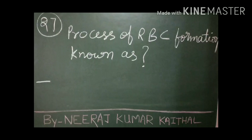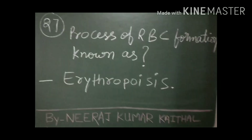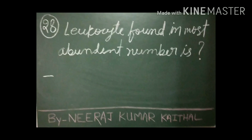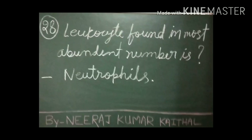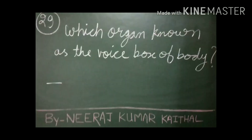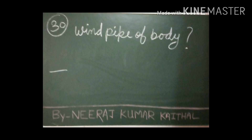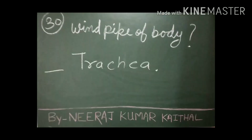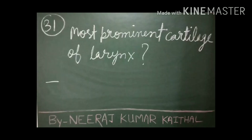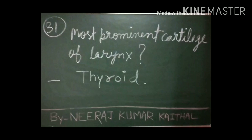The process of red blood cell formation is known as erythropoiesis. The type of leukocyte found in the most abundant number is the neutrophil. Which organ is known as the voice box of the body? The larynx is known as the voice box. Which organ is known as the windpipe of the body? The trachea is known as the windpipe. The most prominent cartilage of the larynx is the thyroid cartilage.